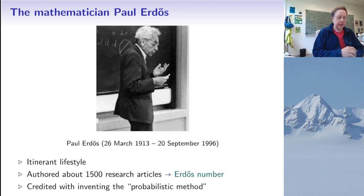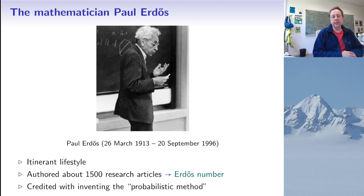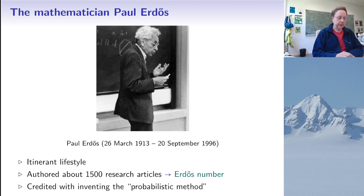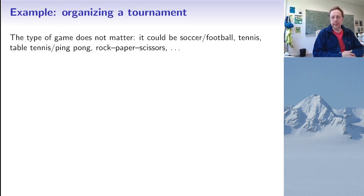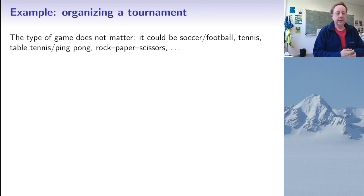Today we are interested in Paul Erdős because he is often credited with inventing the so-called probabilistic method. It's always hard to be sure — the idea is very simple, so it's quite possible other people had it before him — but he is certainly one person who used it a lot in his work. Instead of presenting this method in an abstract setting, I'm going to present it through a particular example, because it's going to be more fun.